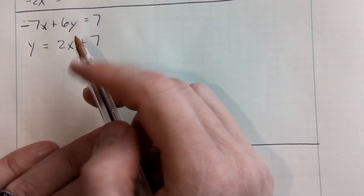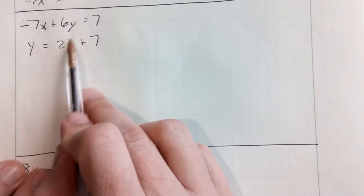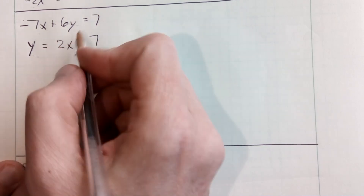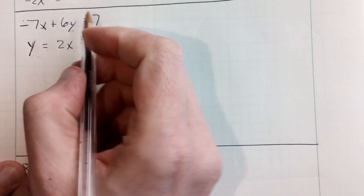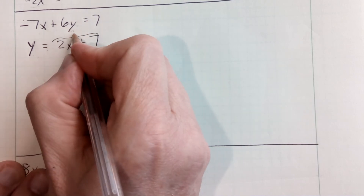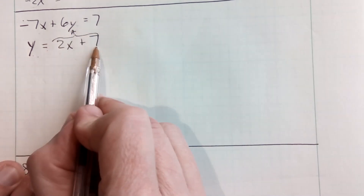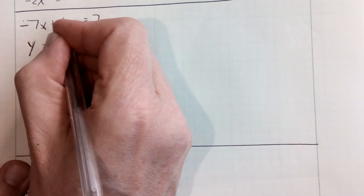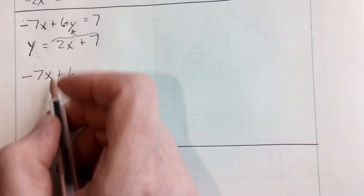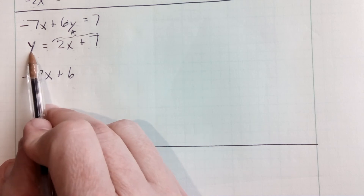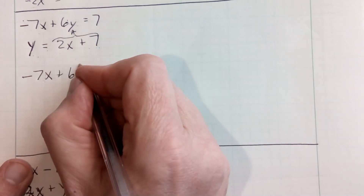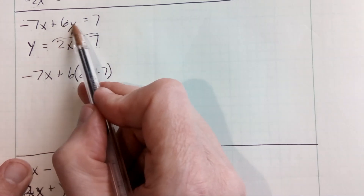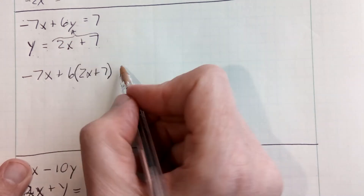They might actually give you one where one of them is written in standard form versus slope-intercept form. Take the one that has the y by itself and replace the y in the other equation with what it says y is. So I'm going to replace that y with 2x plus 7. Let's rewrite this top equation: negative 7x plus 6 — but now instead of y, I'm going to put what y is. And always put parentheses: 2x plus 7.